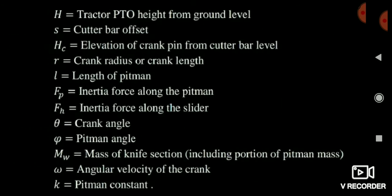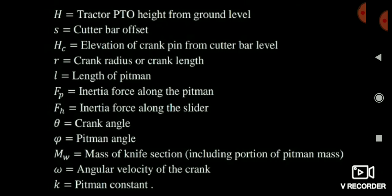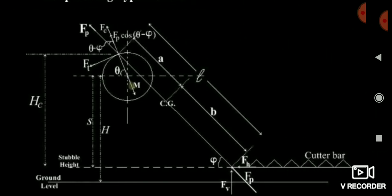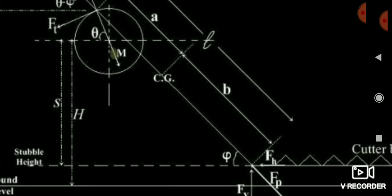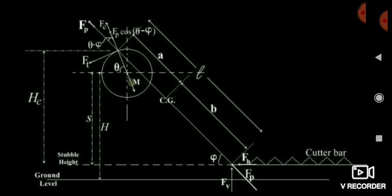Here you can see the notations. The inertia force along the pitman is Fp — Fp is nothing but the inertia force along the pitman. Phi is the pitman angle — the angle which is made with the horizontal surface.